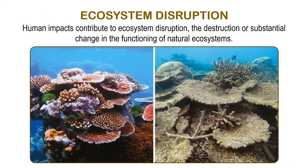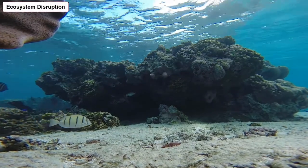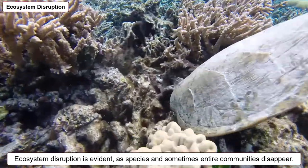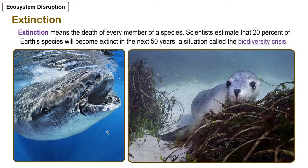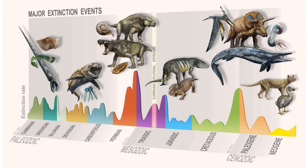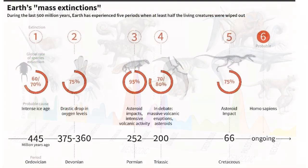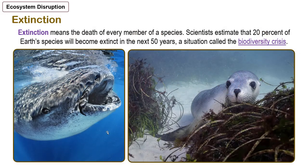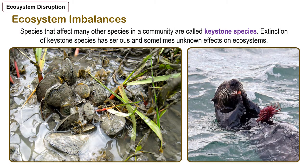All these problems mentioned so far can lead to what we can call ecosystem disruption — the destruction or substantial change in the functioning of natural ecosystems. Ecosystem disruption is evident as species and sometimes entire communities can disappear. Extinction means the death of every member of a species. Scientists estimate that 20% of Earth's species will become extinct in the next 50 years. Living species have not been lost at such a high rate since the mass extinction of the dinosaurs 65 million years ago, and most probably the mass extinction currently underway is unique because humans are the primary cause of these extinctions.